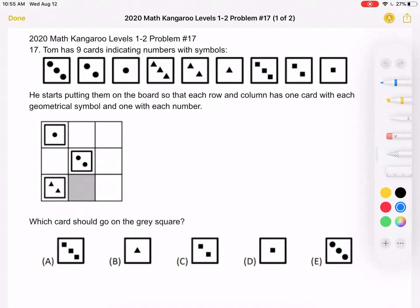Tom has nine cards indicating numbers with symbols. He starts putting them on the board so that each row and column has one card with each geometrical symbol and one with each number. Which card should go on the gray square?